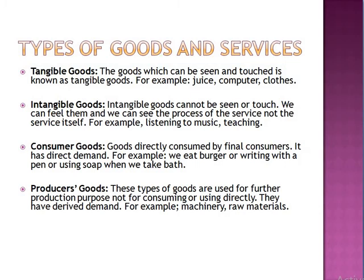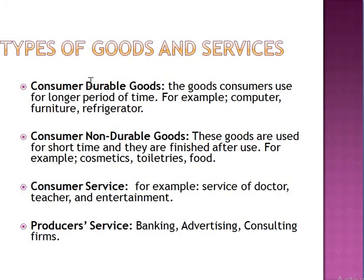The other kinds of goods and services: consumer durable goods are goods consumers use for a longer period of time — for example, computer, furniture, refrigerator. Non-durable goods include cosmetics, toiletries, and food. Consumer services — for example, service of a doctor, teacher, and other entertainment like going to watch a movie. Producer services include banking, advertising, and consulting firms.